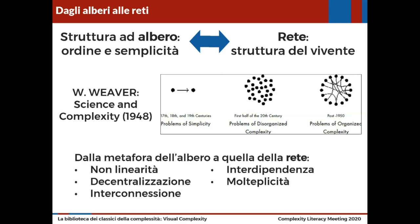Quindi c'è questo cambiamento da una struttura ad albero, che per lungo tempo è stata una metafora prevalente e ci ha aiutato a comprendere e dare ordine e semplicità alla natura che cercavamo di studiare, alla struttura a rete, che è la struttura del vivente. Si passa alla rete in quanto sinonimo di non-linearità, decentralizzazione, interconnessione, interdipendenza — cose di cui abbiamo anche parlato questa sera.